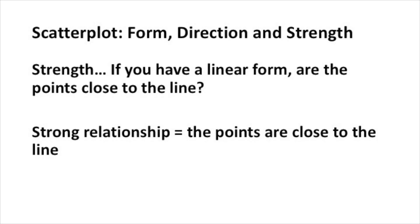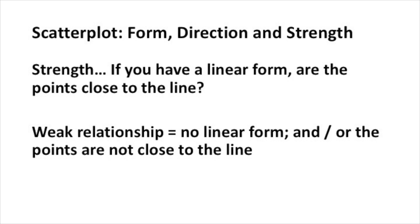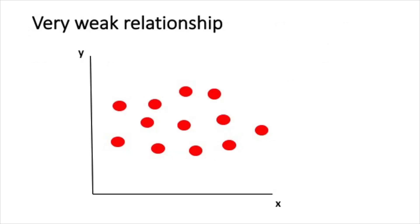After characterizing a scatter plot's form and direction, you want to think about the strength of the relationship. If you have a linear form, are the points close to the line? You have a strong relationship if the points are close to the line, and a weak relationship if the points are farther away. Here's an example of a scatter plot with a very strong relationship — in fact, these points actually follow a straight line, so this is about as strong of a relationship as you can get. We characterize a scatter plot as having a weak relationship either if there's no linear form, or if the points are not close to the line. This is an example of a scatter plot with a very, very weak relationship — in this case, there's no clear linear form.